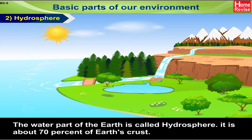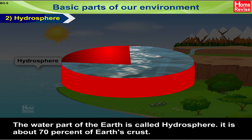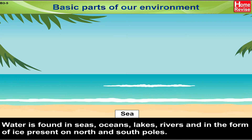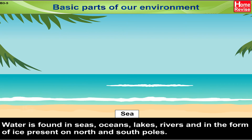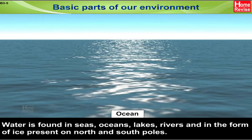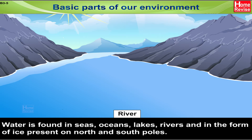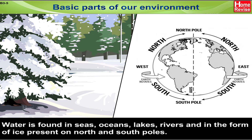2. Hydrosphere: The water part of the Earth is called the hydrosphere, and it is about 70% of Earth's crust. Water is found in seas, oceans, lakes, rivers, and in the form of ice present on the North and South Poles.